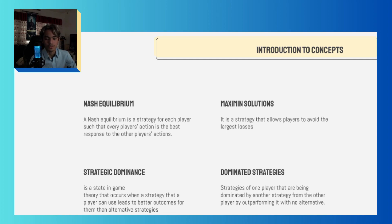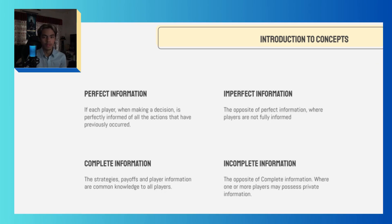Dominated strategies are strategies of one player that are being dominated by another strategy from the other player by outperforming it with no alternative. Perfect information means each player, when making a decision, is perfectly informed of all the actions that have previously occurred. Imperfect information is the opposite — where players are not fully informed.